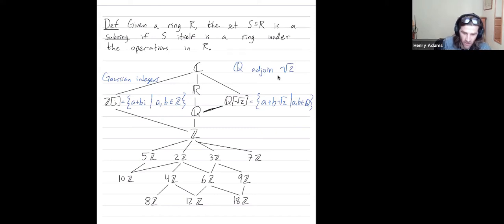So you maybe are starting to get the pattern of this adjoin notation. Z adjoined i, I just looked at all things of the form a plus b i, where a and b were in z. And then q adjoined the square root of 2, that was all things of the form a plus b times the square root of 2, where a and b were rationals. So it's sort of like this letter is going here and this symbol is going here.